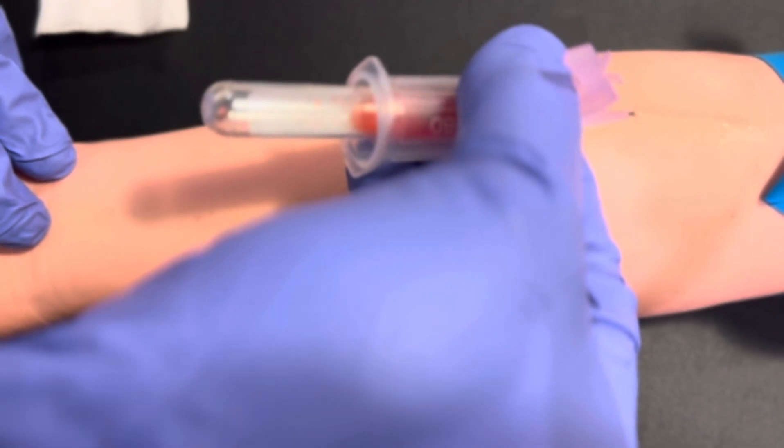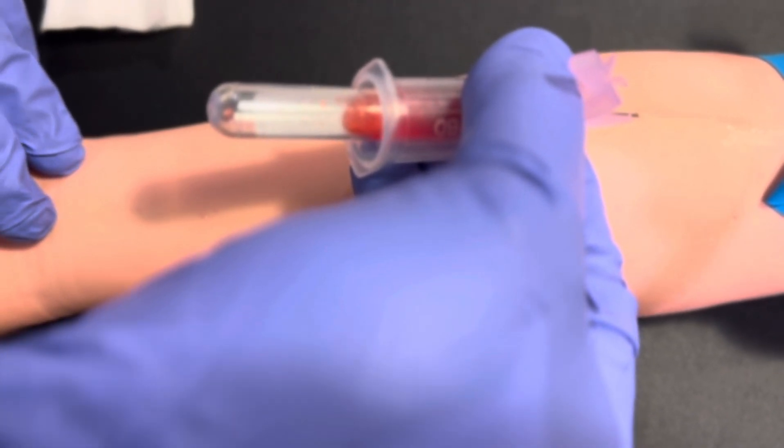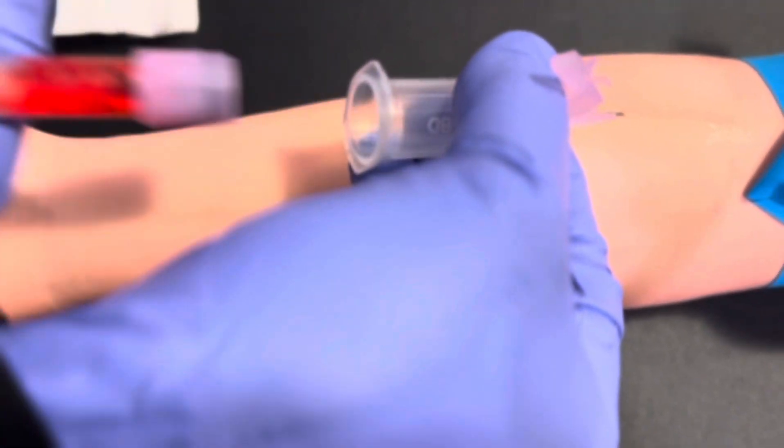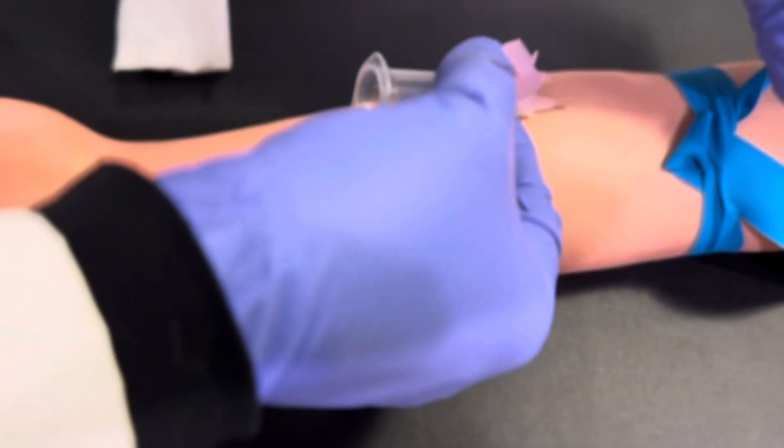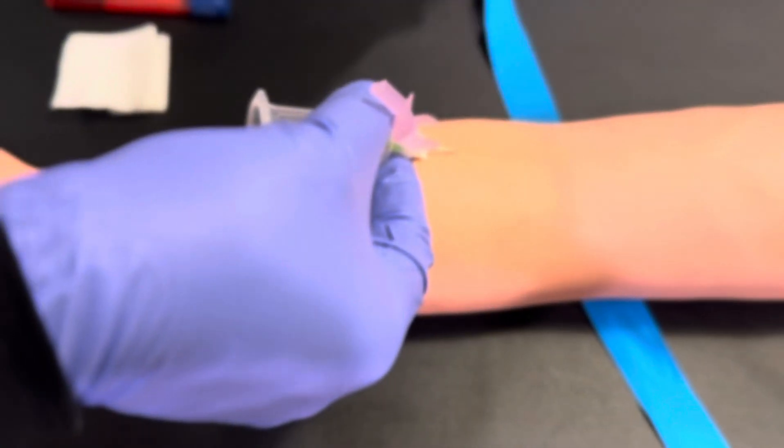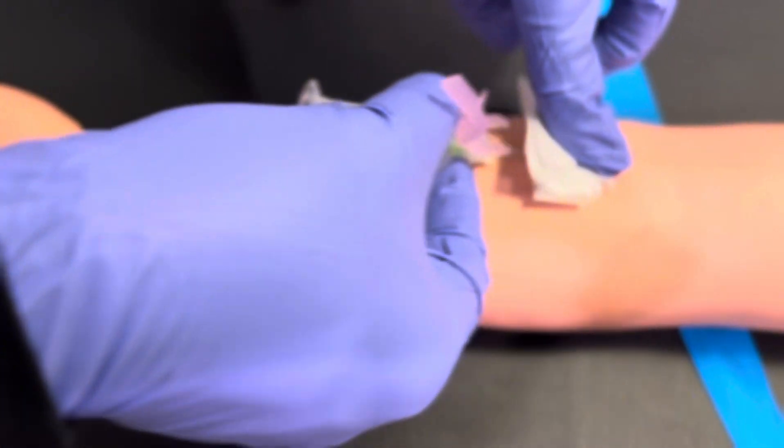Once the last tube is three-quarters of the way full, you can remove the tube, release the tourniquet, and apply your two-by-two gauze.